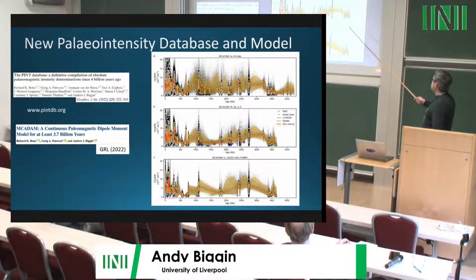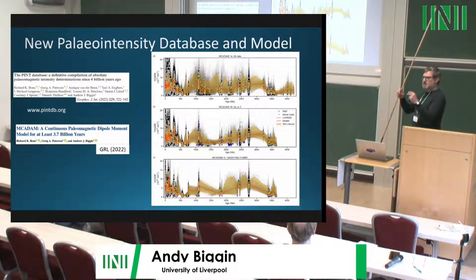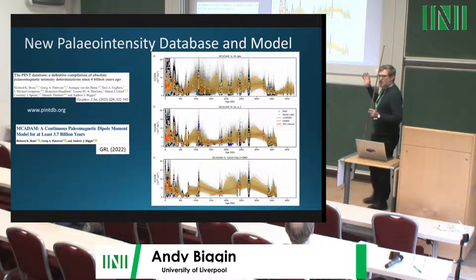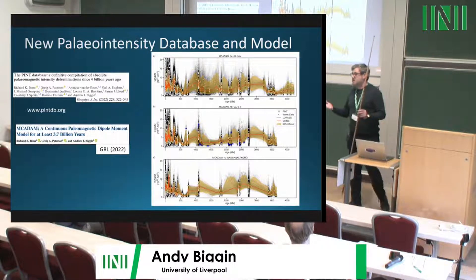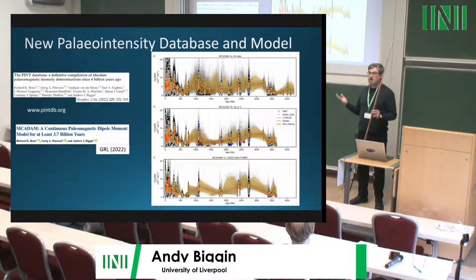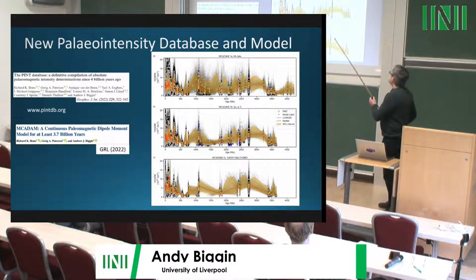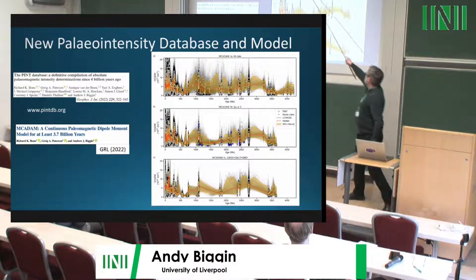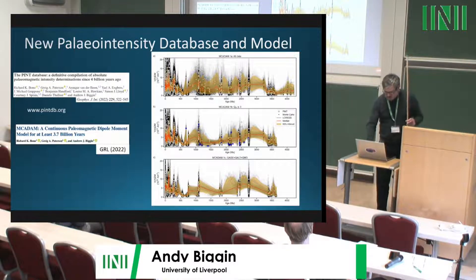Returning to the McCadden model — the field is not always stable, and there were some gaps in the record. I want to talk about two time periods where we can't say the field was axial dipole dominated, and they are quite significant intervals. You can barely see them as fluctuations on the long-term plots, so let's zoom in.